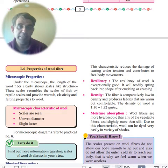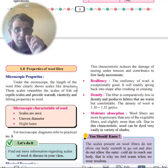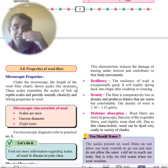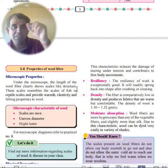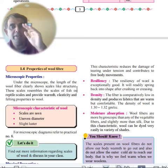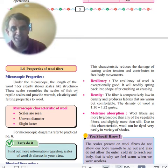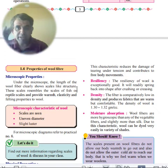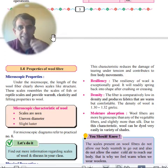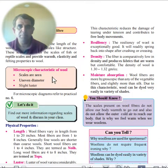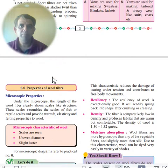Microscopic properties: under a microscope, wool shows scales similar to fish scales. These scales help provide warmth through layering. Fiber diameters are uneven and there is slight luster visible.